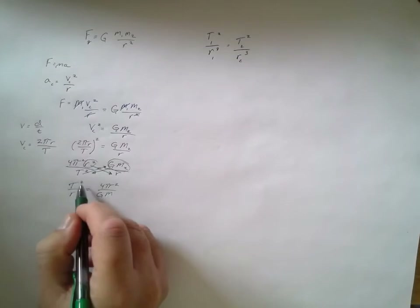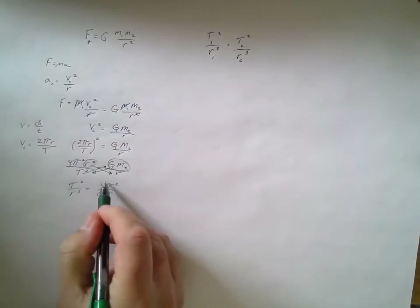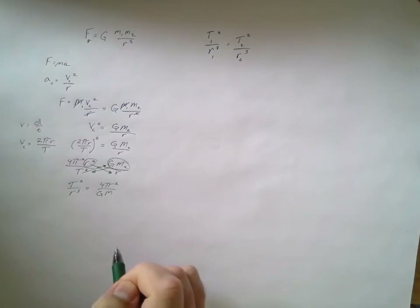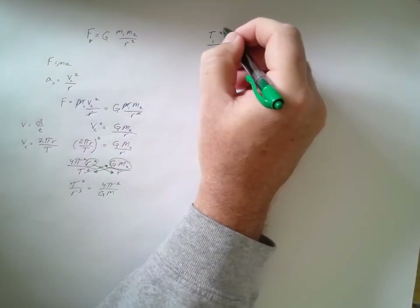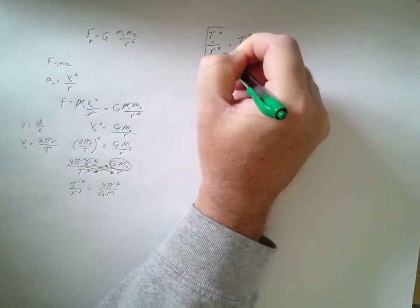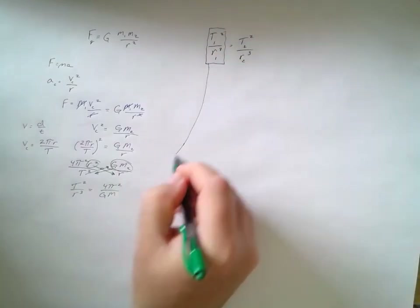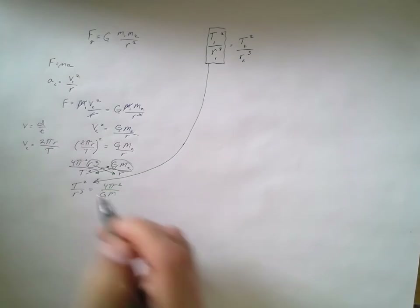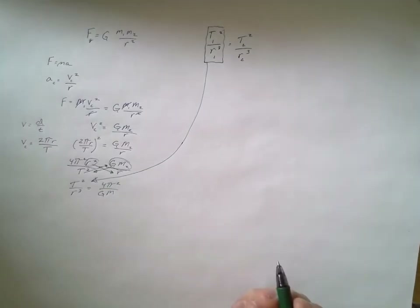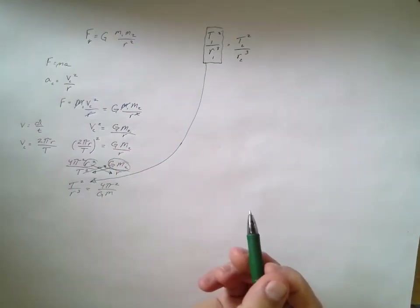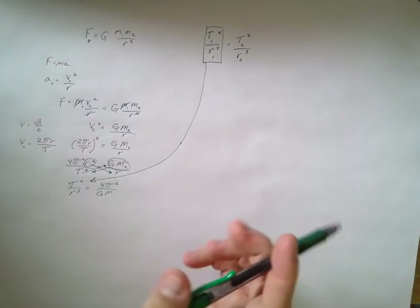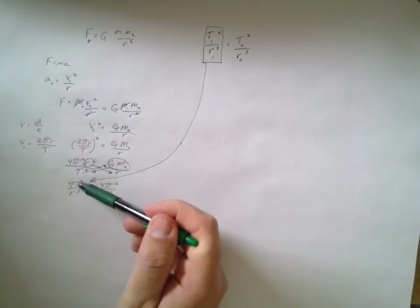This result — T squared over r cubed equals 4π² over Gm — is Kepler's Third Law. We have now shown that Kepler's empirical Third Law is directly derivable from Newton's Universal Law of Gravitation combined with centripetal acceleration.